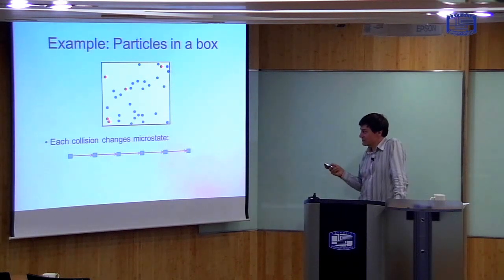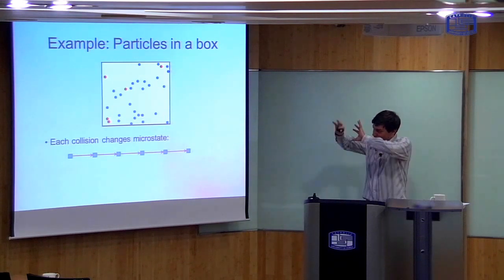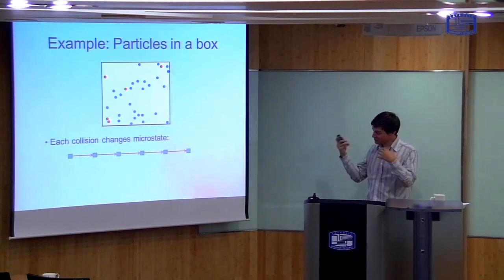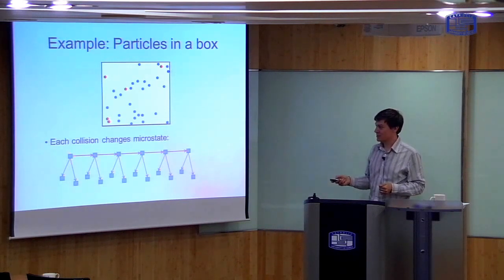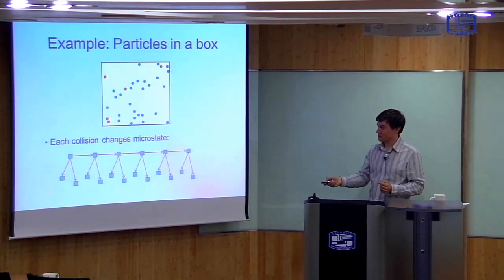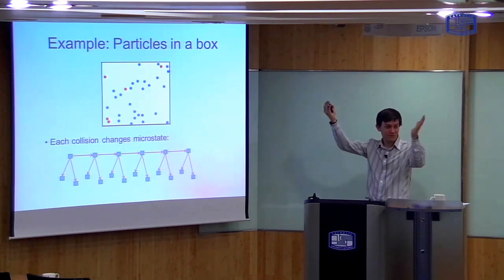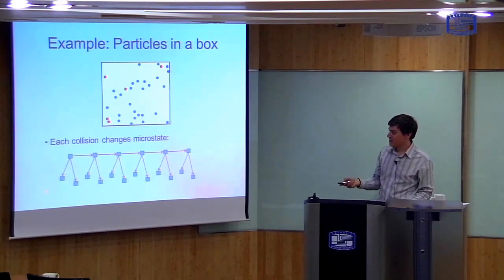I can describe the evolution of the system in terms of the microstate it's in at each particular point in time, and each time there's a collision the microstate is changed. Now, if I'd started the system with the particles in a slightly different configuration of positions, then other collisions are possible. If I'd scattered them in a different way and run the same simulation, I could have got different results — instead of going from this microstate into that one, I could have gone into a different microstate with a different kind of collision.